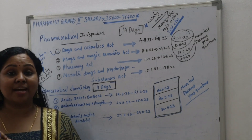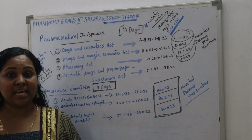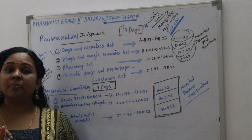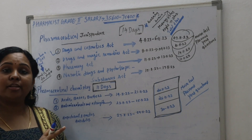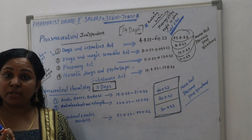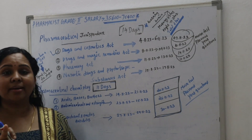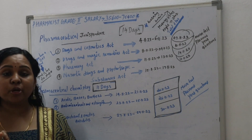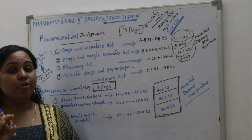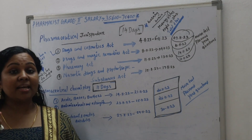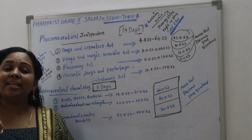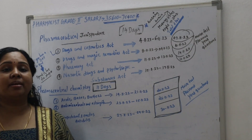You will be able to prepare for Pharmacist Grade 2. You will also do one thing — if you are studying Pharmaceutical Jurisprudence, you will have a textbook in your hand. You will need to read that textbook carefully across these 4 chapters.